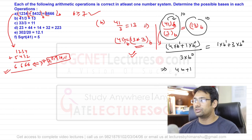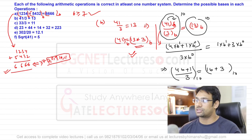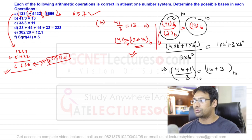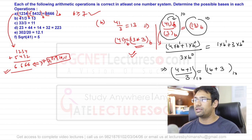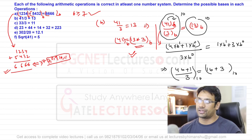So 4b + 1 = 3(b + 3) = 3b + 9. Therefore 4b − 3b = 9 − 1, giving b = 8. The base of this number system is 8.